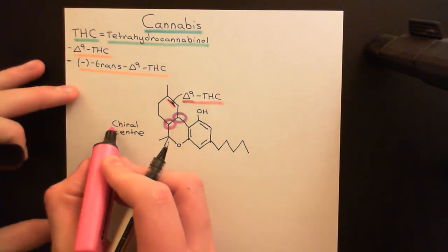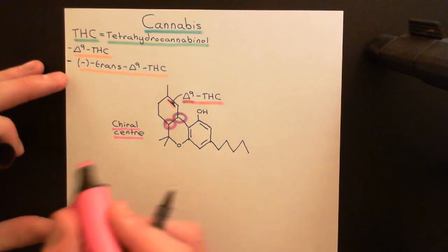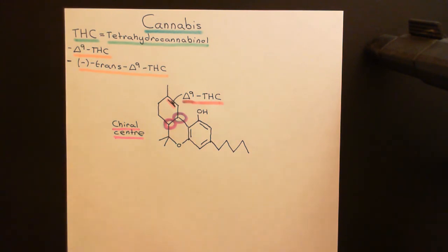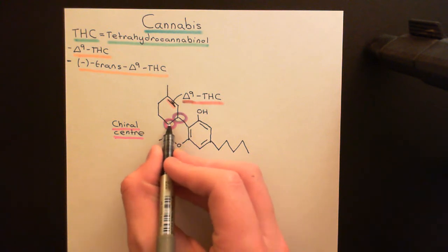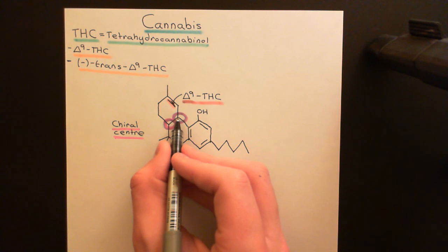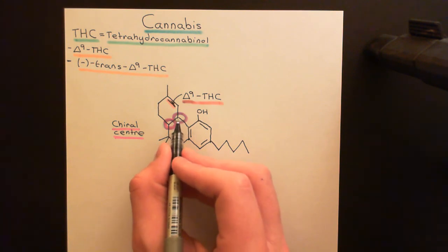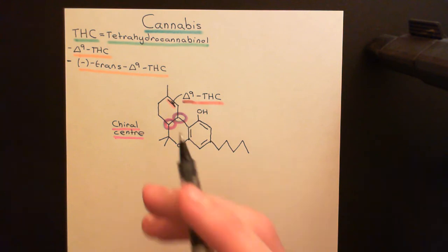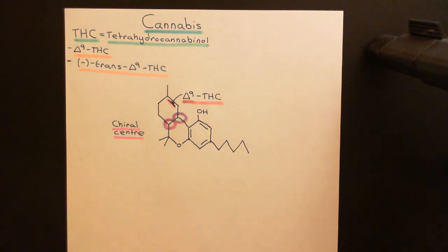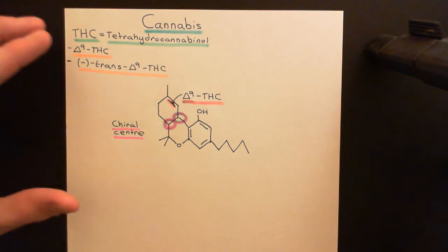Why are they chiral centers? Simply because they have four different groups coming off them. It may not look as though they have four different groups, but each one of these carbons also has a hydrogen atom coming off it — that hydrogen is the fourth group not shown on the picture because we don't show hydrogens coming off carbon atoms in skeletal structures. Having that final hydrogen means these do indeed have four different groups, and whenever you have a carbon with four different groups coming off it, that gives rise to two different optical isomers.